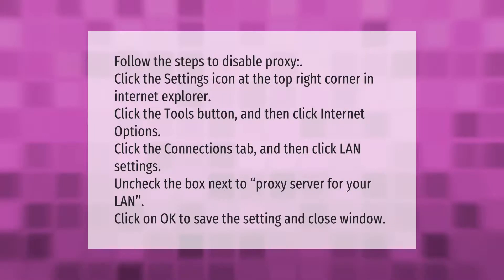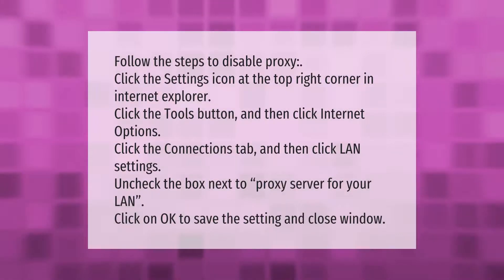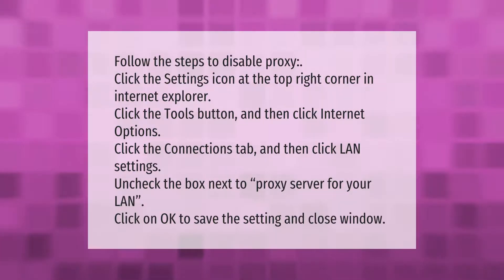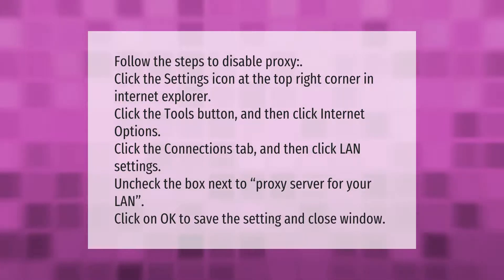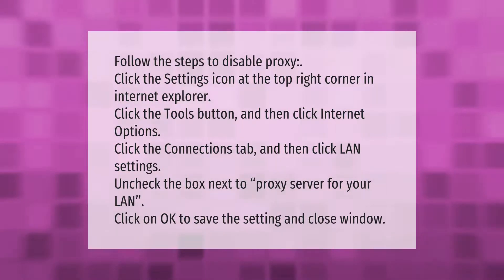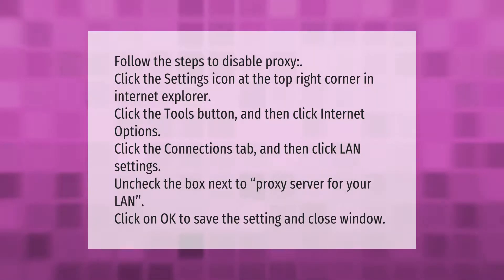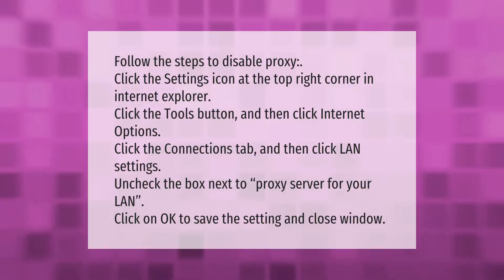To disable proxy, click the Settings icon at the top right corner in Internet Explorer. Click the Tools button and then click Internet Options. Click the Connections tab and then click LAN Settings. Uncheck the box next to Proxy Server for your LAN, click OK to save the setting, and close the window.